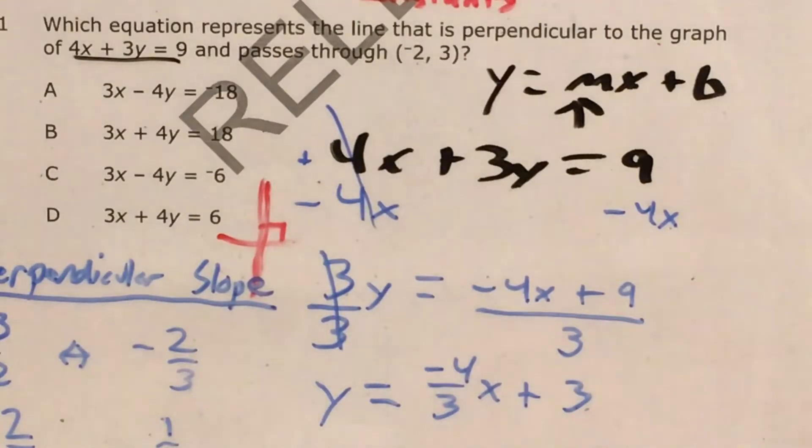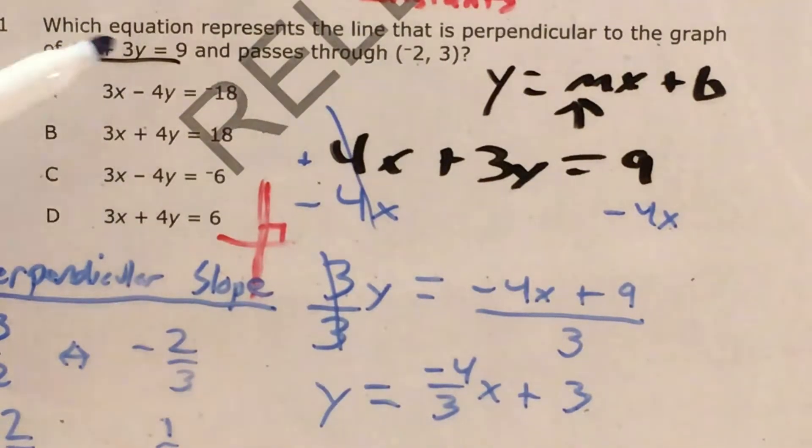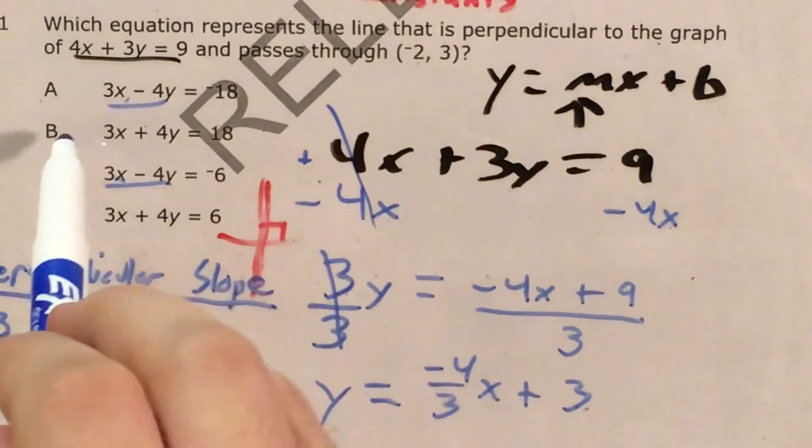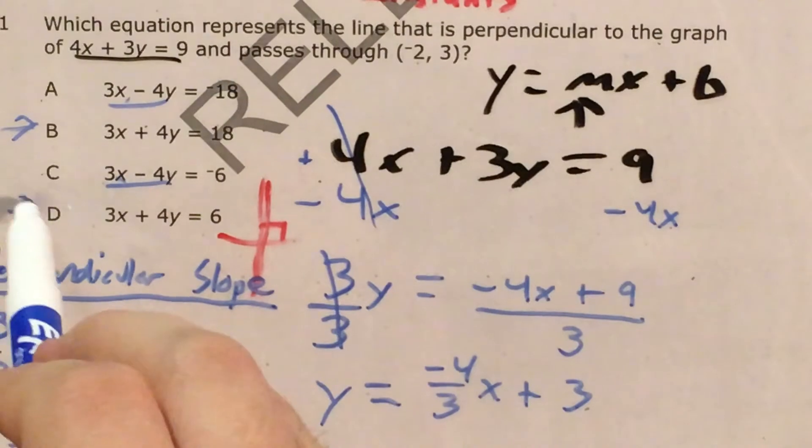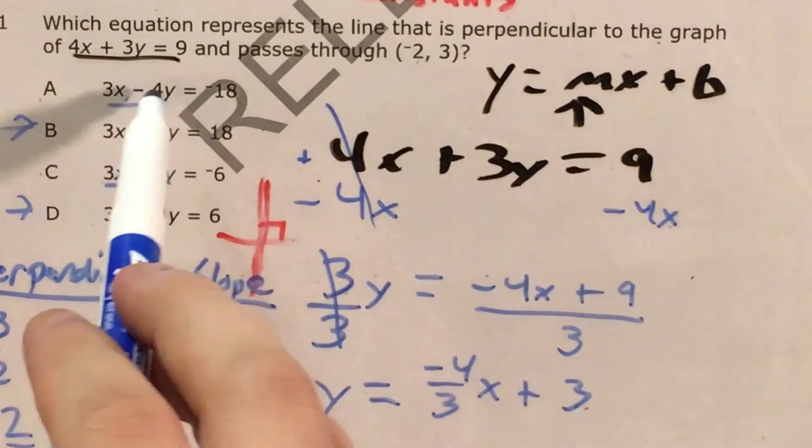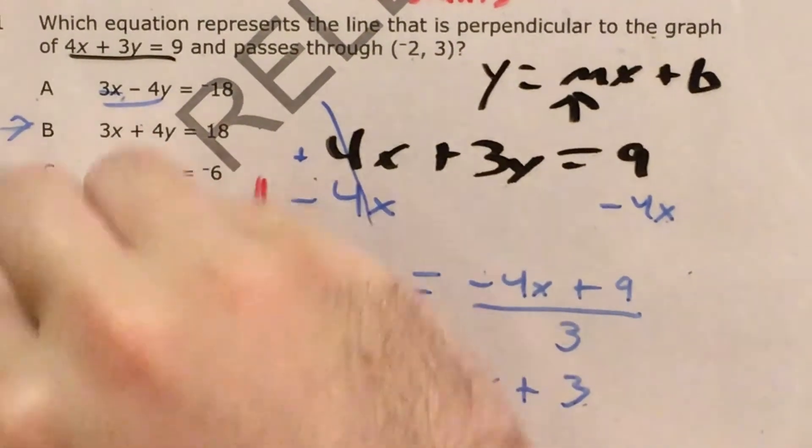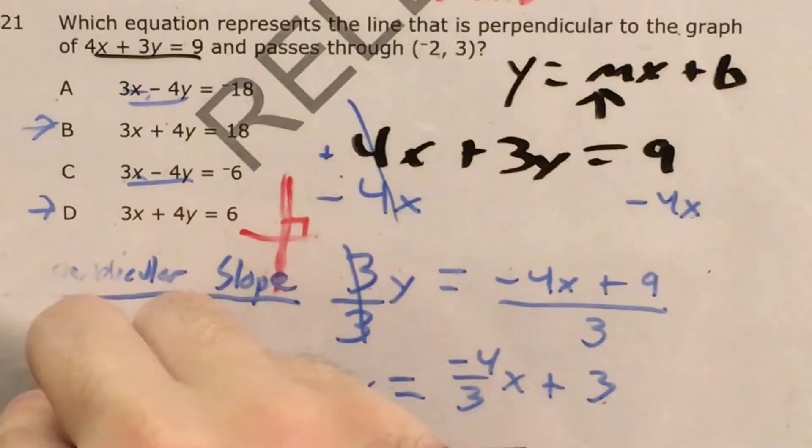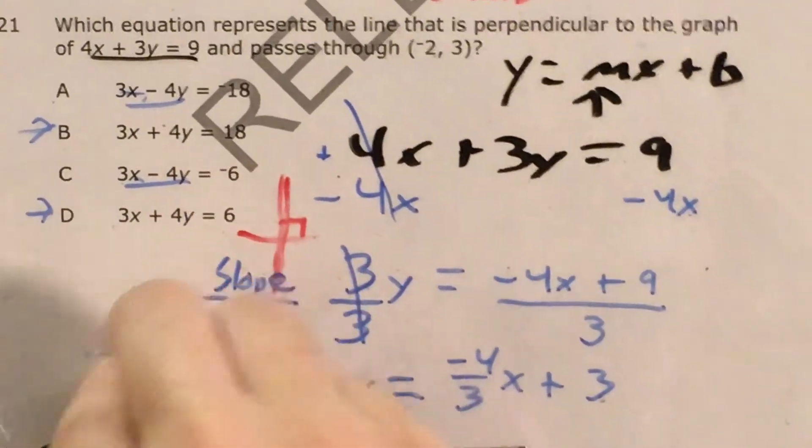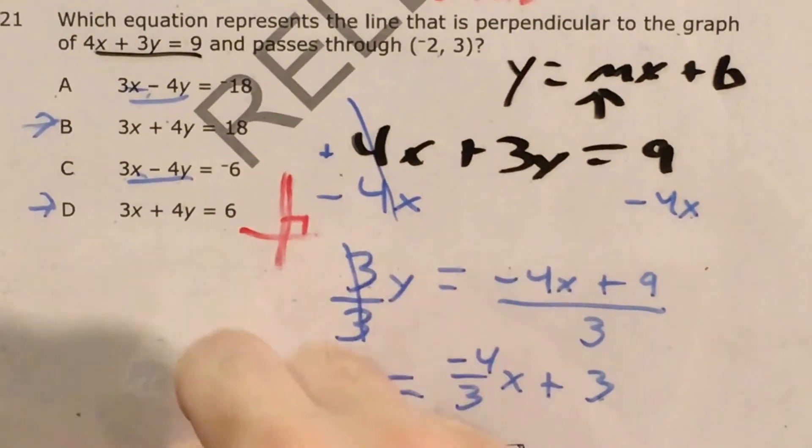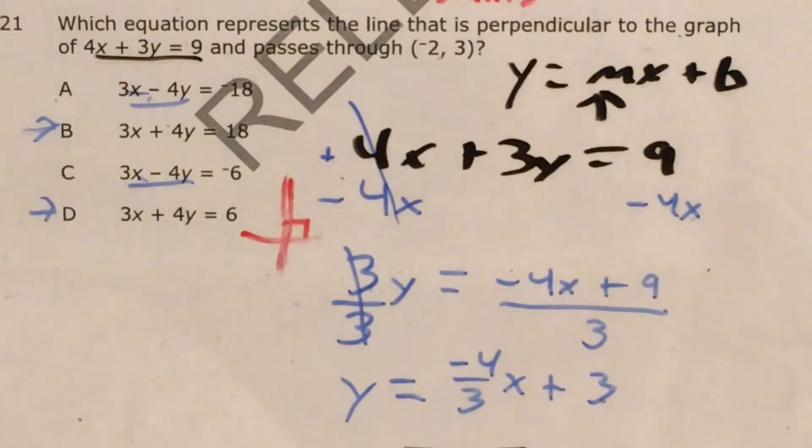So at this point, I need to actually test out each of these. And I can actually see that choice A and choice C have the same x and y coefficients, and then choice B and choice D have the same x and y coefficients. So I'm just going to have to test choice A and choice B, see which one gets me the slope that I'm looking for, if I'm looking for perpendicular slopes.